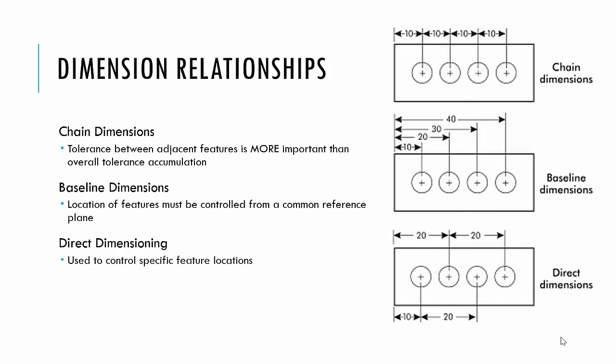How we do dimension relationships: there are three ways. There's chain dimensioning, baseline dimensions, and direct dimensioning. Chain dimensions means the tolerance between adjacent features is more important than the overall tolerance accumulation. The top image shows you what chain dimensions look like.